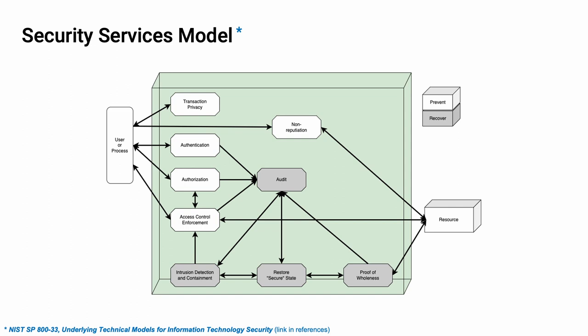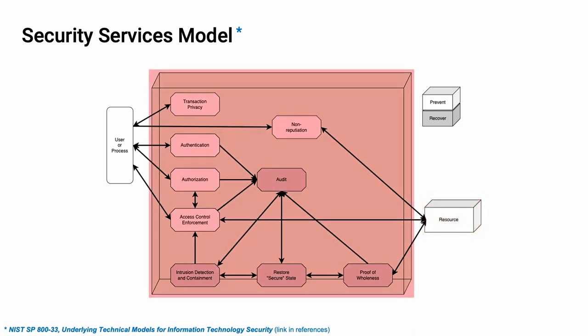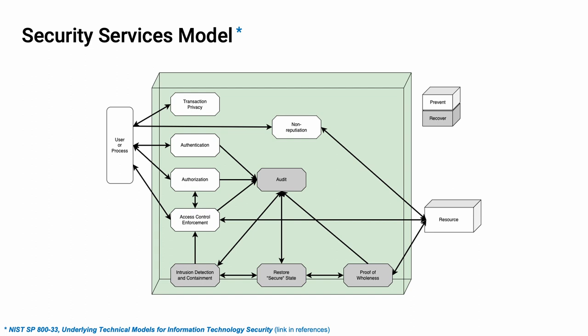Here's the model for security services that NIST developed in SP-800-33. We have the user on the left — which can be a process or a person — and the resource of interest on the right. Between the two are activities that mediate the interaction. For confidentiality, we have the activity labeled transaction privacy. For integrity, we have proof of wholeness. And for availability, we could map that to the access control enforcement to make sure you can actually get at the thing you want.